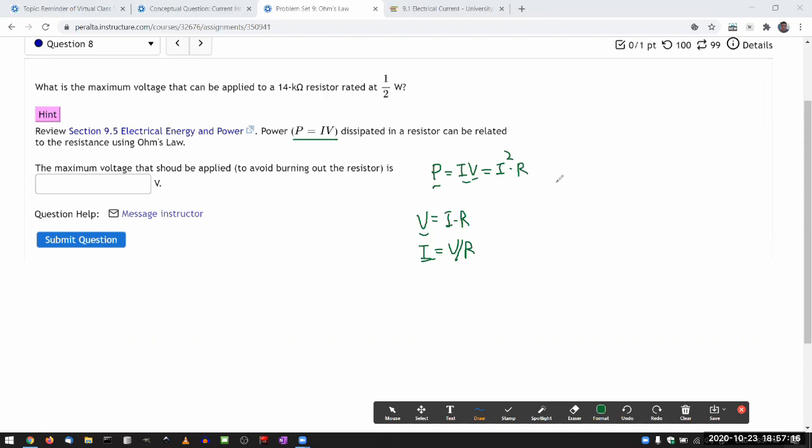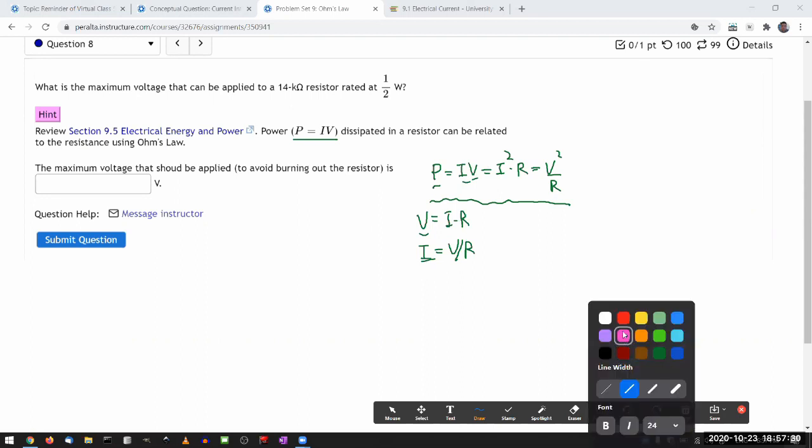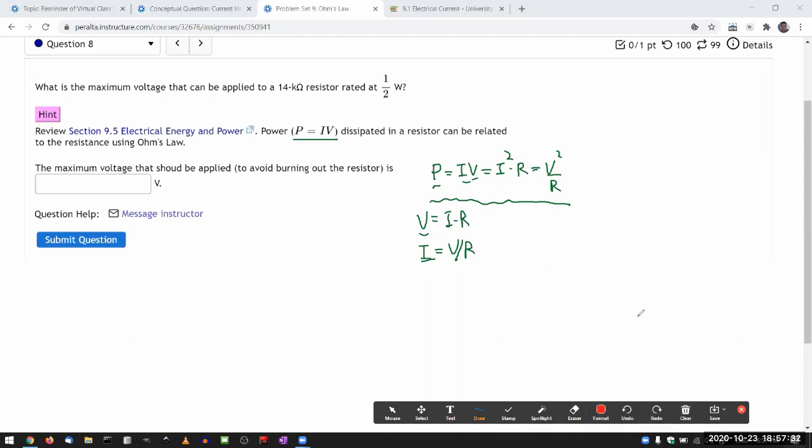Or if you plug in current, eliminating current and getting expression only in terms of voltage, then you get V squared over R. And all these three expressions are useful at different times. It kind of depends on what information you're given, what parameter is not changing.